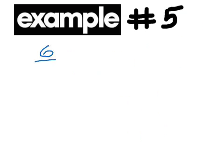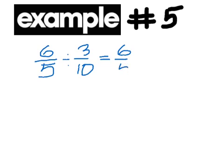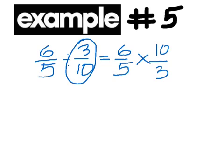Example 5: if I have 6 over 5 divided by 3 over 10, if you're going to divide fractions, you keep the first fraction the same, change the division to multiplication, and then flip the second one to 10 over 3. From there, multiply straight across to get 60 over 15. 15 goes into both of them and it will turn out to be 4.